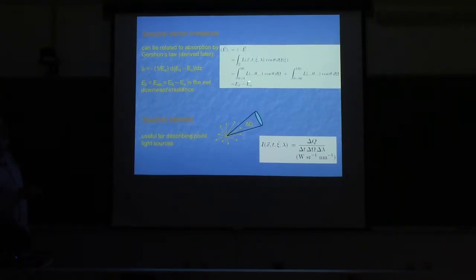You integrate 0 to 90 with a plus cosine, then from 90 to 180 the cosine is negative. You really have ED minus EU, which is the Z component of the vector irradiance.